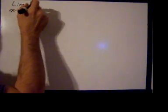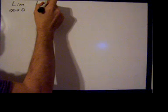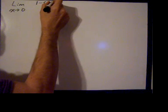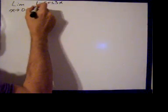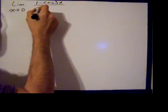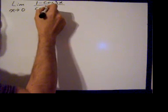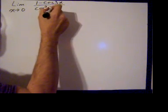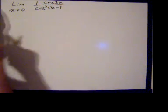Hello, today we're going to evaluate a limit. It's the limit as x approaches 0 of 1 minus the cosine of 3x divided by the cosine squared of 5x minus 1.